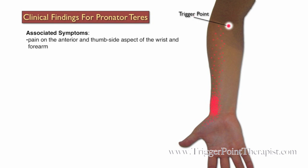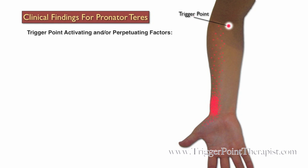Associated symptoms for trigger points in the pronator teres muscle include pain on the anterior and thumb side part of the wrist and forearm, and clients will also be unable to supinate a cupped hand as when there are coins placed into it. Some factors that may activate or perpetuate pronator teres trigger points include prolonged gripping of tools and a fracture of the wrist or forearm.